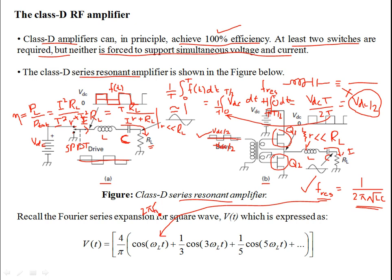If the LC resonance is set to ω_L, then only the first term (the fundamental) of the Fourier series expansion of the square wave gets through the series RLC circuit. The third, fifth, and other odd harmonics are rejected. So at the output you will have a perfect sinusoid of a single tone at frequency ω_L.